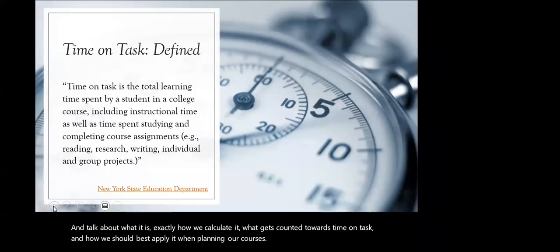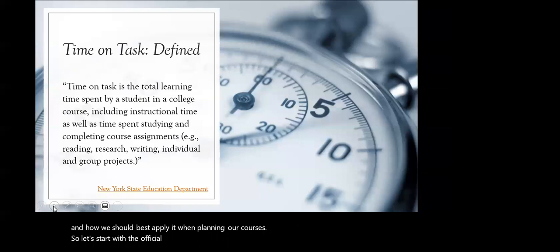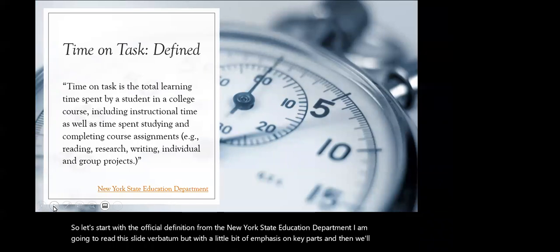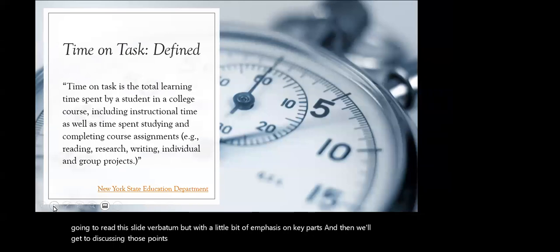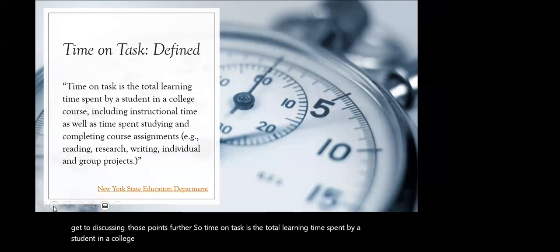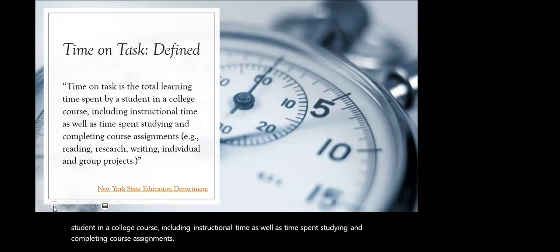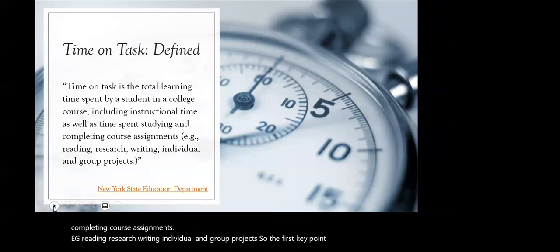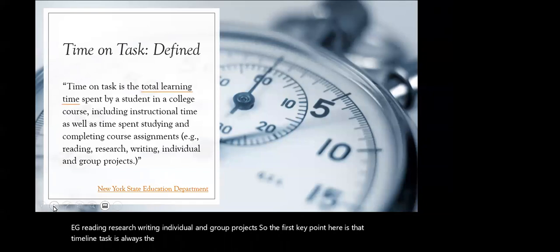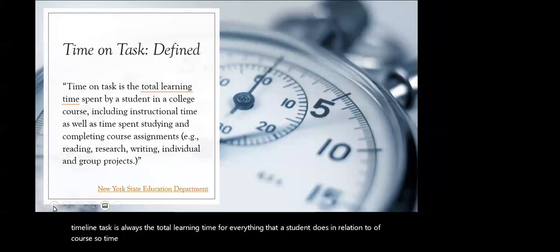Let's start with the official definition from the New York State Education Department. Time on task is the total learning time spent by a student in a college course, including instructional time as well as time spent studying and completing course assignments — e.g. reading, research, writing, individual and group projects. The first key point is that time on task is always the total learning time for everything that a student does in relation to a course. Time on task equals total learning time.